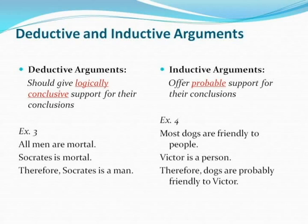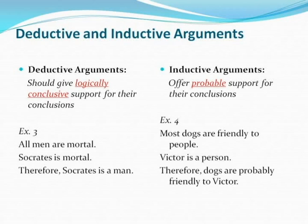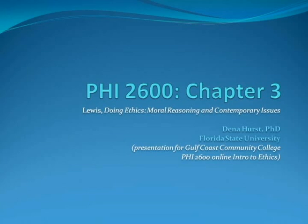Take a look at the next example, our inductive argument. We cannot infer that most dogs will be friendly to Victor just because Victor is a person and most dogs are friendly to people — our conclusion does not follow from our premises. We can reasonably conclude, as we saw in example two, that if Victor is a dog and most dogs are friendly to people, it is likely that Victor would also have that quality. But when we change the second premise and make Victor a person, we have changed the focus of the argument. Dogs being friendly to Victor does not logically flow from his being a person. And now let's take a closer look at the forms of arguments.